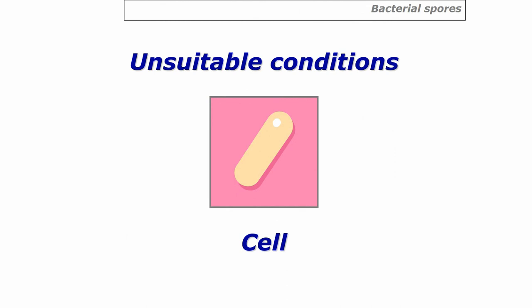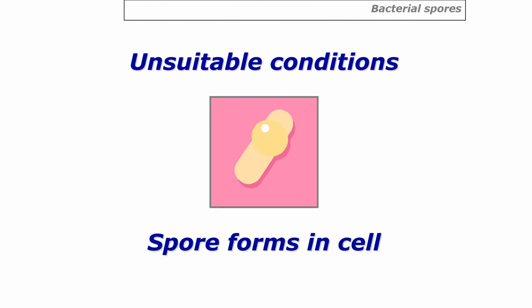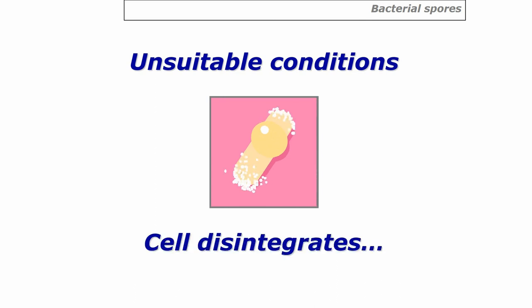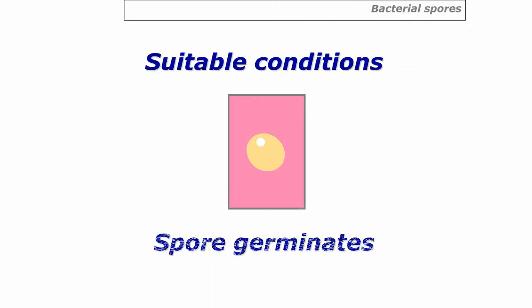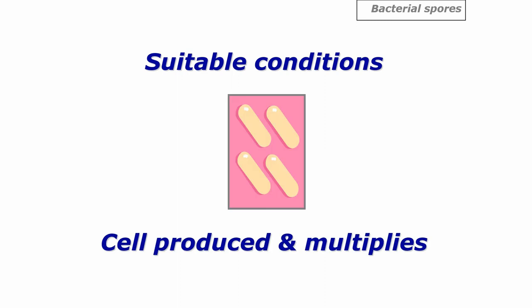Under unsuitable conditions, the bacterial cell forms a spore inside itself and the rest of the cell disintegrates, leaving a harmless spore. It is only when the spore vegetates or germinates — growing back into a bacterial cell — that it becomes dangerous, as it then multiplies into more bacterial cells. Spores won't hurt you in their spore state; we ingest spores daily and they don't germinate inside us because our stomach is very acidic. But given ideal conditions of moisture and nutrients, they will germinate and start to grow.